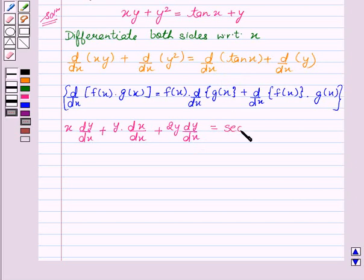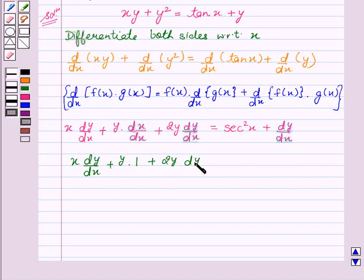This equals sec squared x plus dy by dx. So this can also be written as x dy by dx plus 2y dy by dx equals sec squared x plus dy by dx.